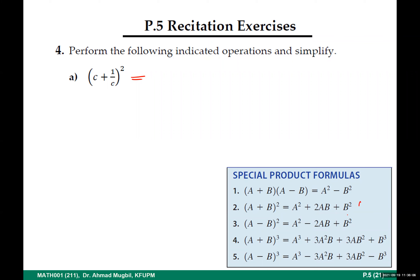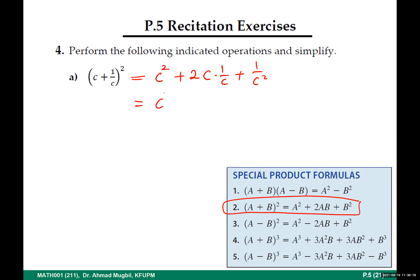Let's now perform the following indicated operations on these algebraic expressions. For (c + 1/c)², we use formula two — the square of a sum: it will be the square of the first term, plus two times the first times the second, plus the square of the last. That gives c² + 2 + 1/c². That's it.